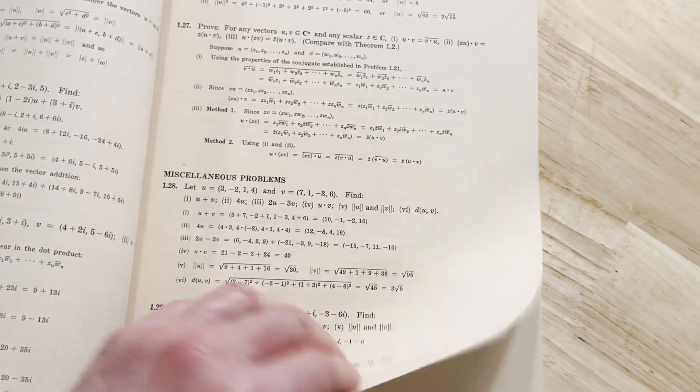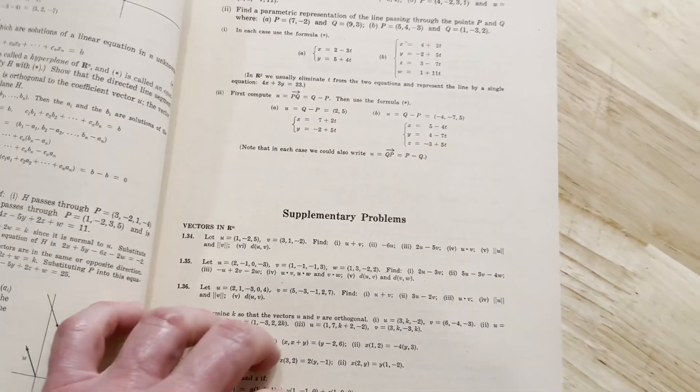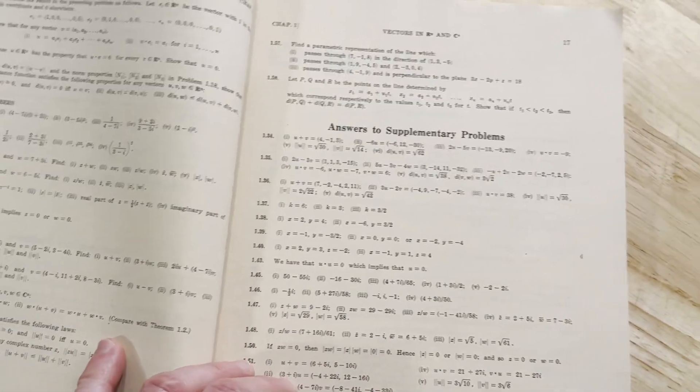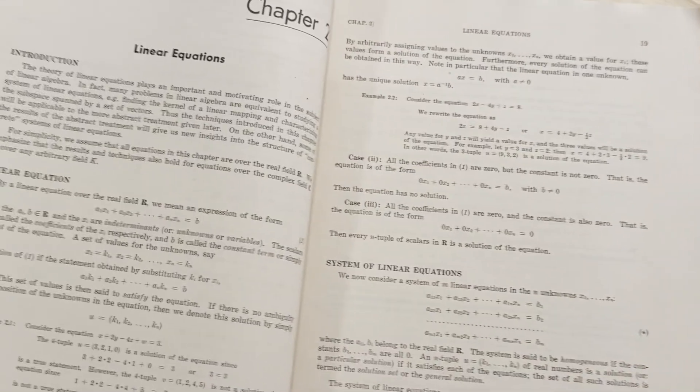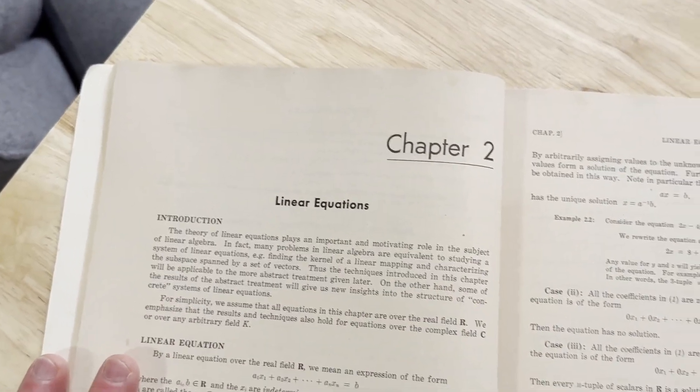And most of the Schaum's have a very similar outline. And then here we have supplementary problems. So even more problems. So it just keeps going and going. Then you have answers here to these supplementary problems. So you've got tons of worked examples. And that's chapter one. And then we go to chapter two, which is linear equations.